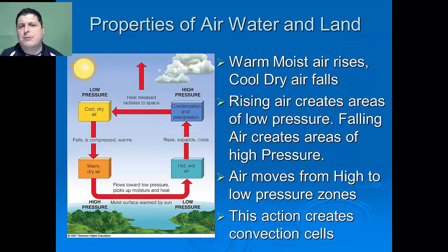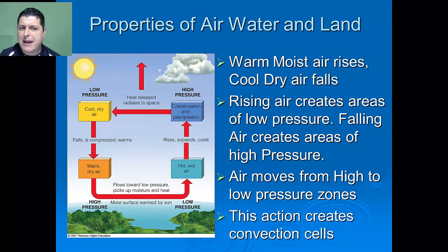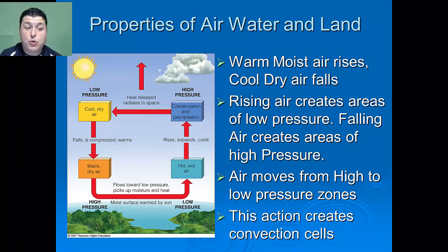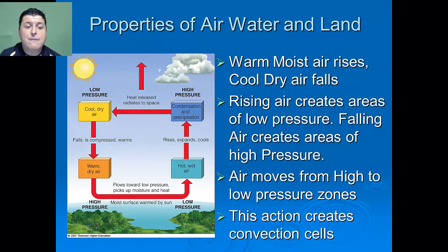Another characteristic which influences climate is the various properties of air, water and land. Warm, moist air tends to rise, whereas cool, dry air will fall. When air rises, it creates an area of low pressure, whereas falling air creates an area of high pressure, and air tends to move from high to low pressure zones.